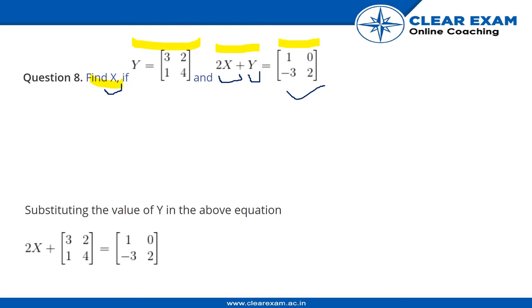The first thing that comes to my mind is that since we are given the matrix Y, we can directly replace this matrix here and then we can solve for X. So let us see what they have done. There it is given that Y is equal to [3, 2; 1, 4].